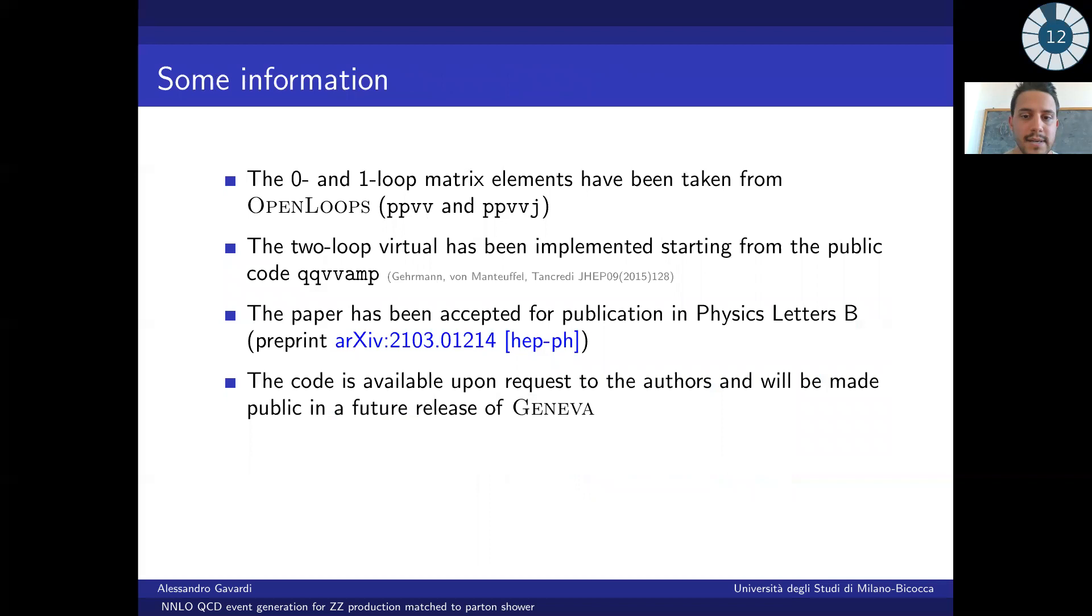Before ending this talk, I would just like to give some additional information on the implementation of this process. All the zero and one-loop matrix elements used have been taken from OpenLoops, while the two-loop virtual contribution has been implemented within Geneva starting from the public code EQVAMP. The entire code is available upon request to the authors and will be made public in a future release of Geneva.